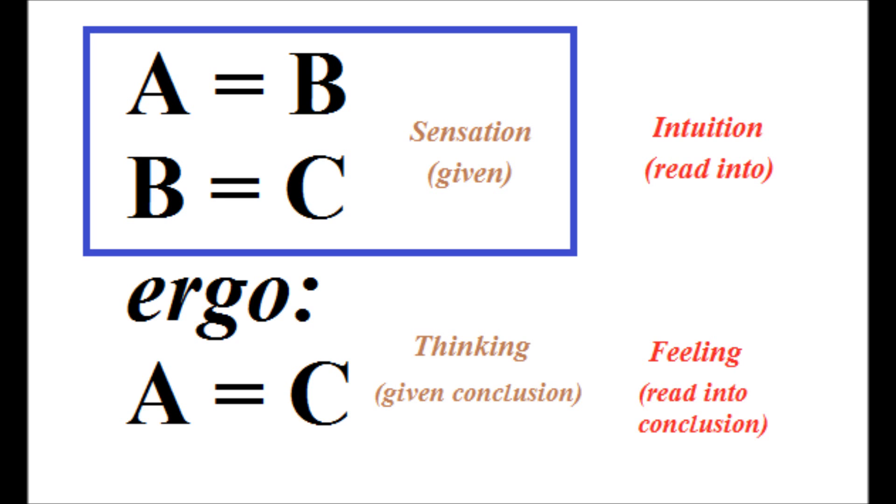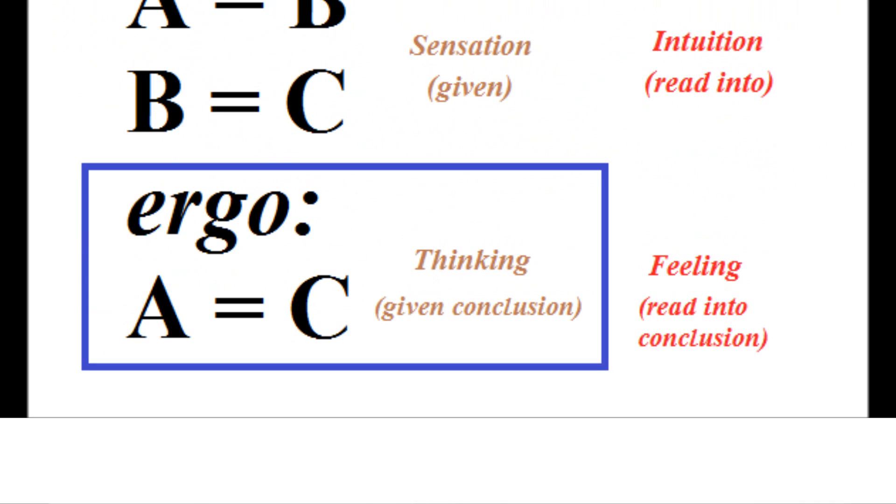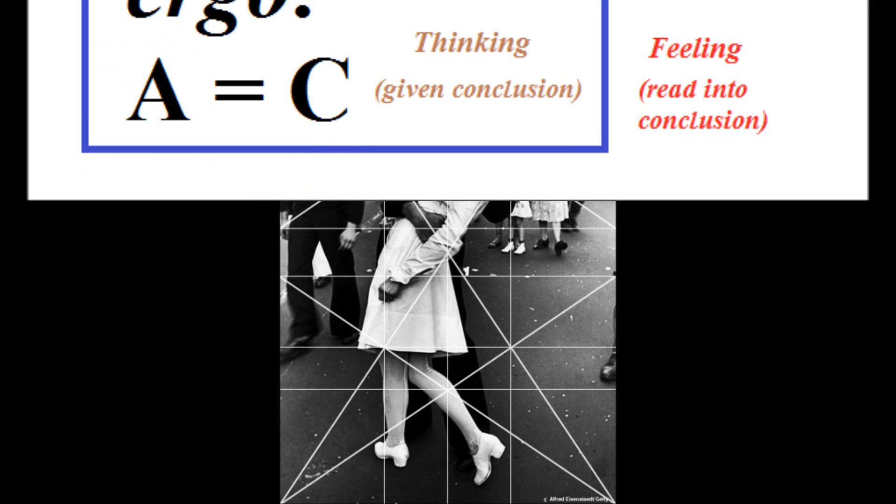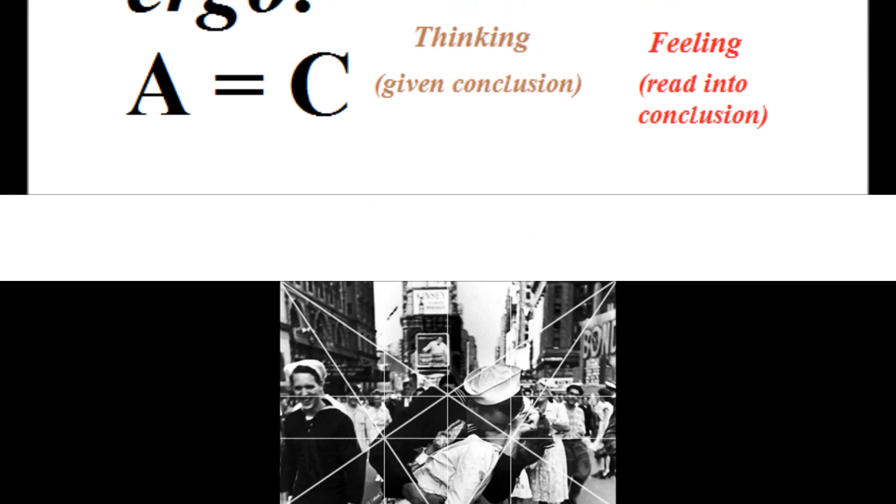Thus, sensation is empirical perception, or the apprehension of the given, i.e. apprehension proper, just sort of pure apprehension as we normally think of it. Thinking is empirical judgment or evaluation based on the given, the given data, i.e. basic interpretation in terms of given ends.